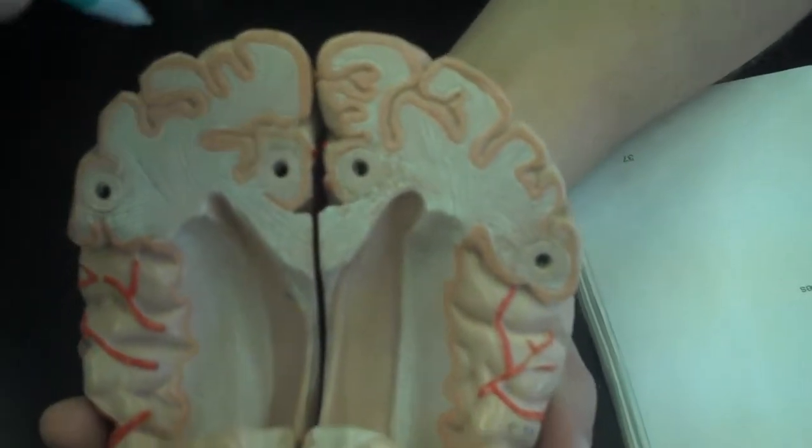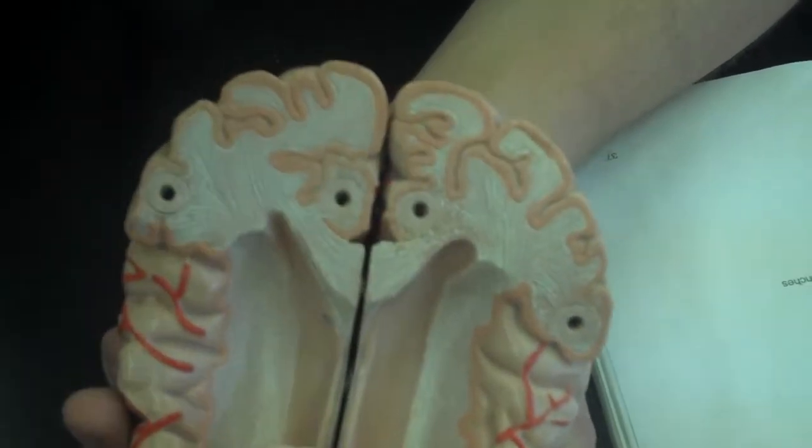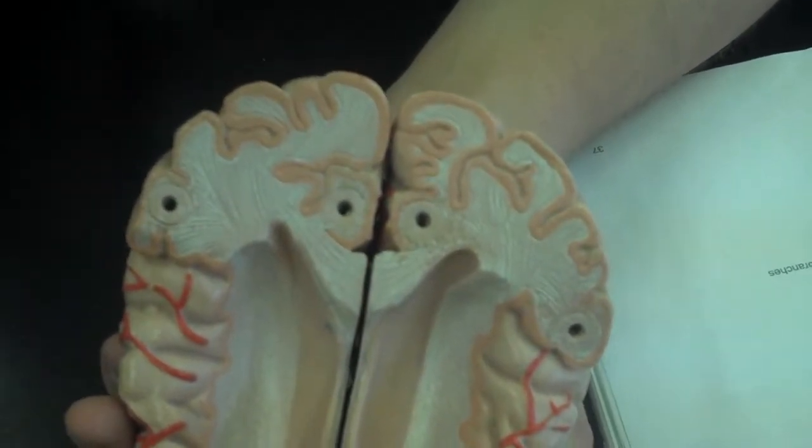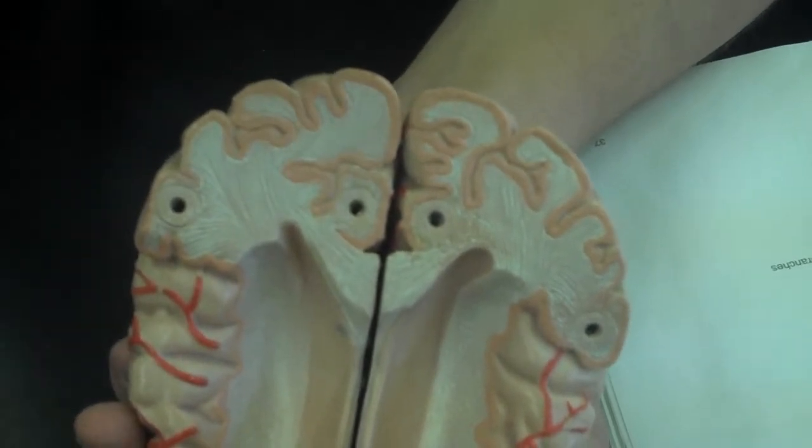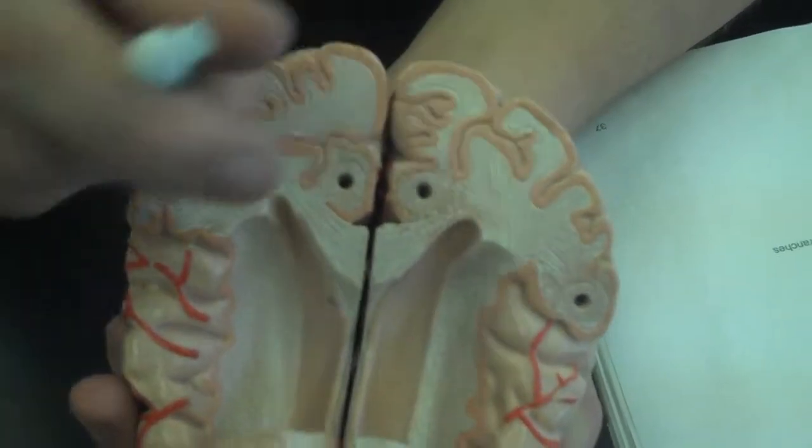Think of the gray matter as the epidermis of the brain. There are different layers of the epidermis. The cortex is the outermost layer of the gray matter.